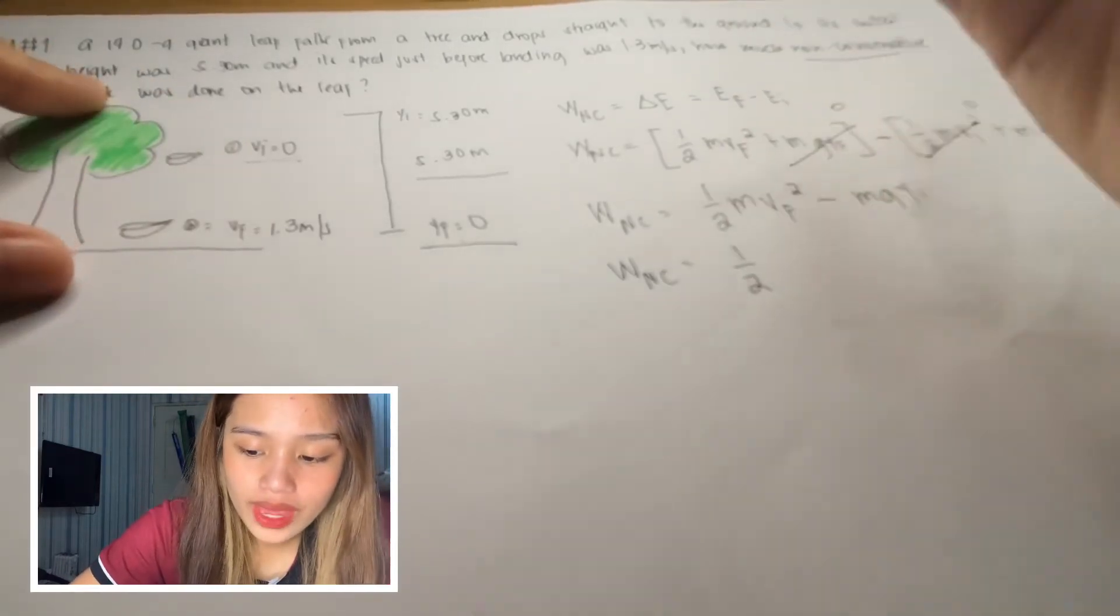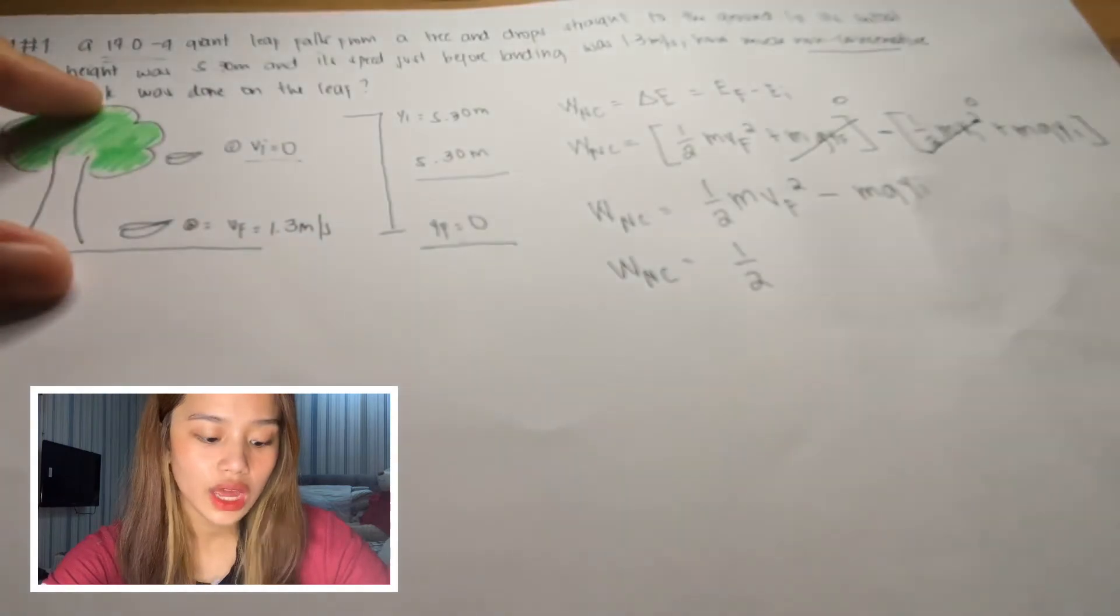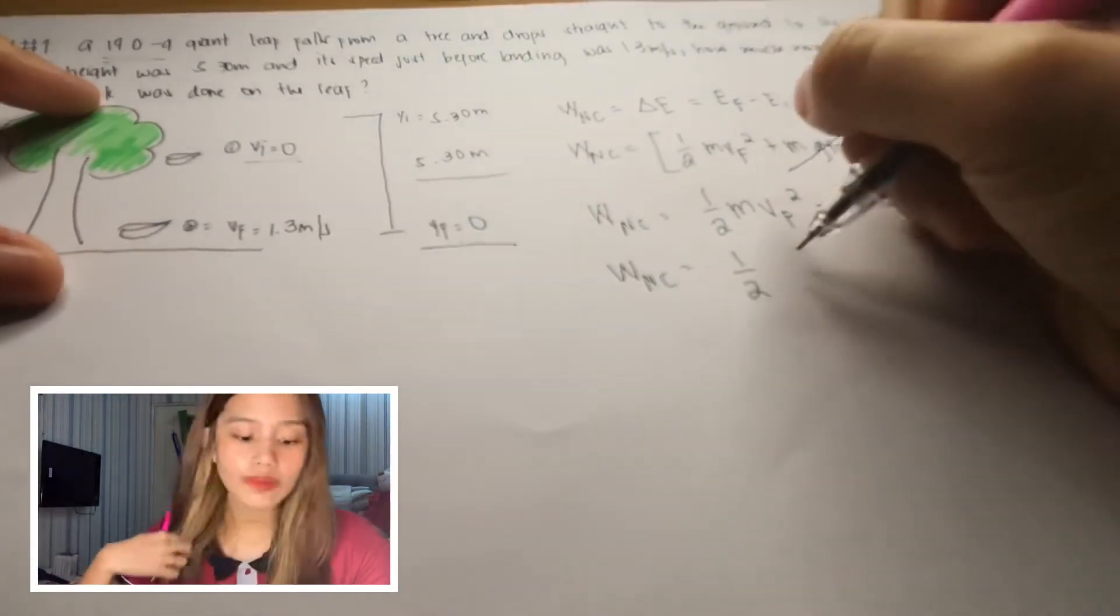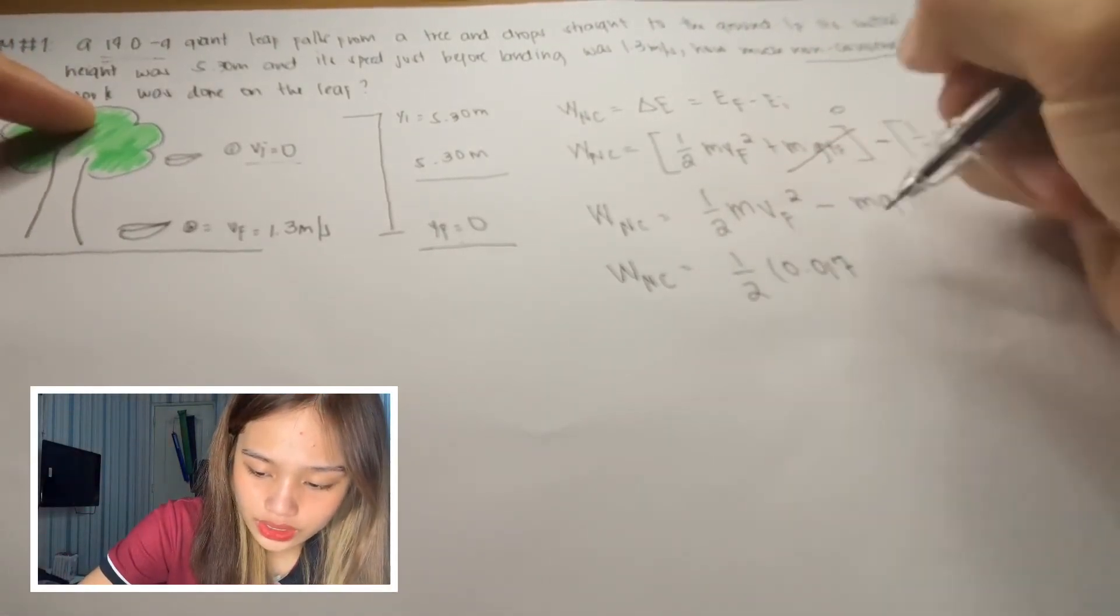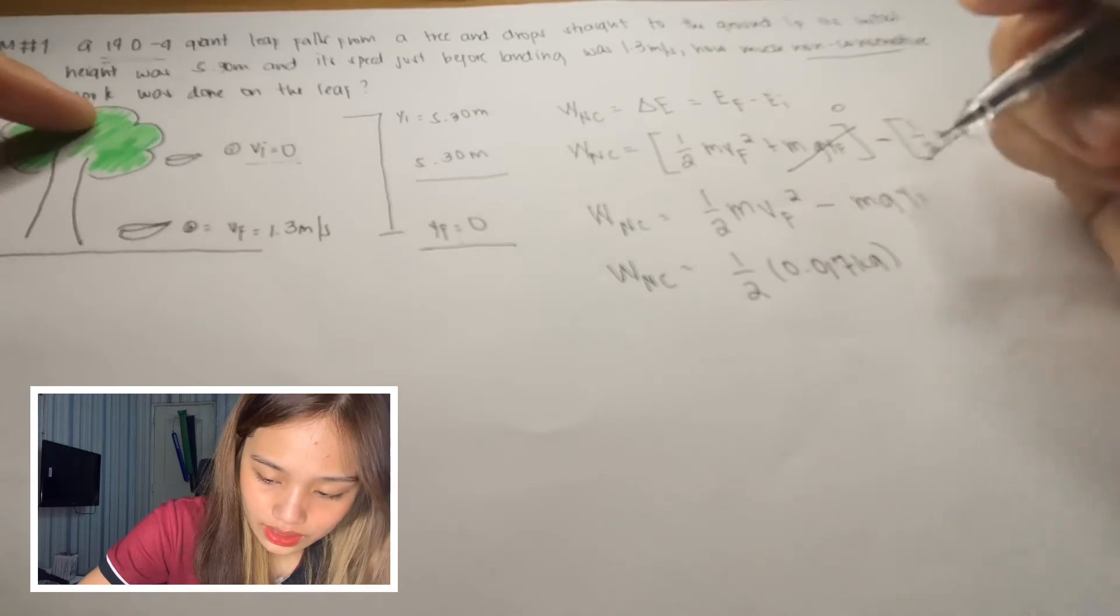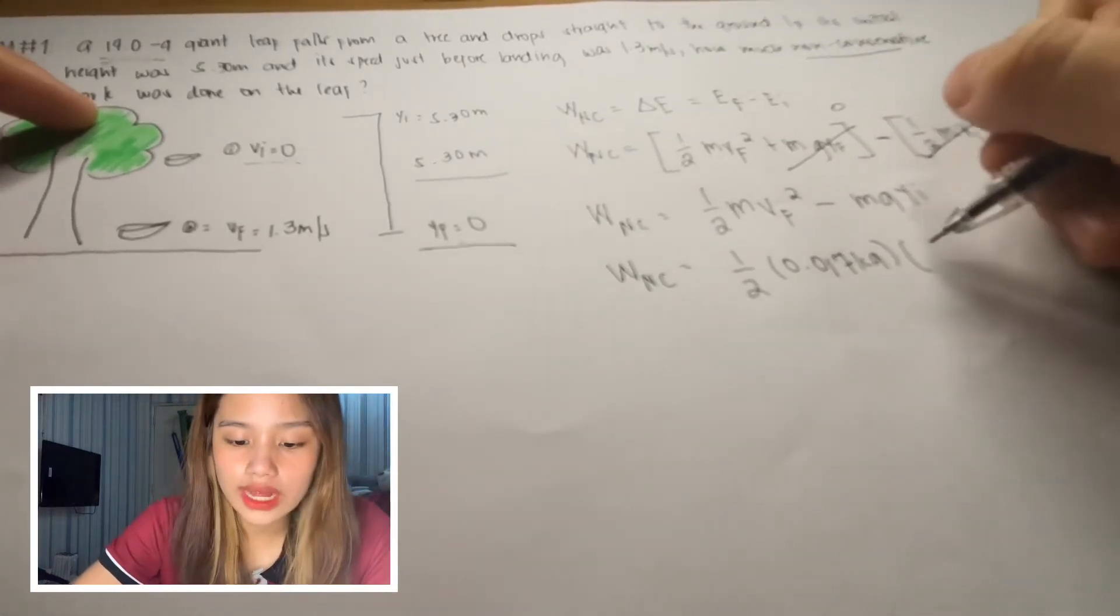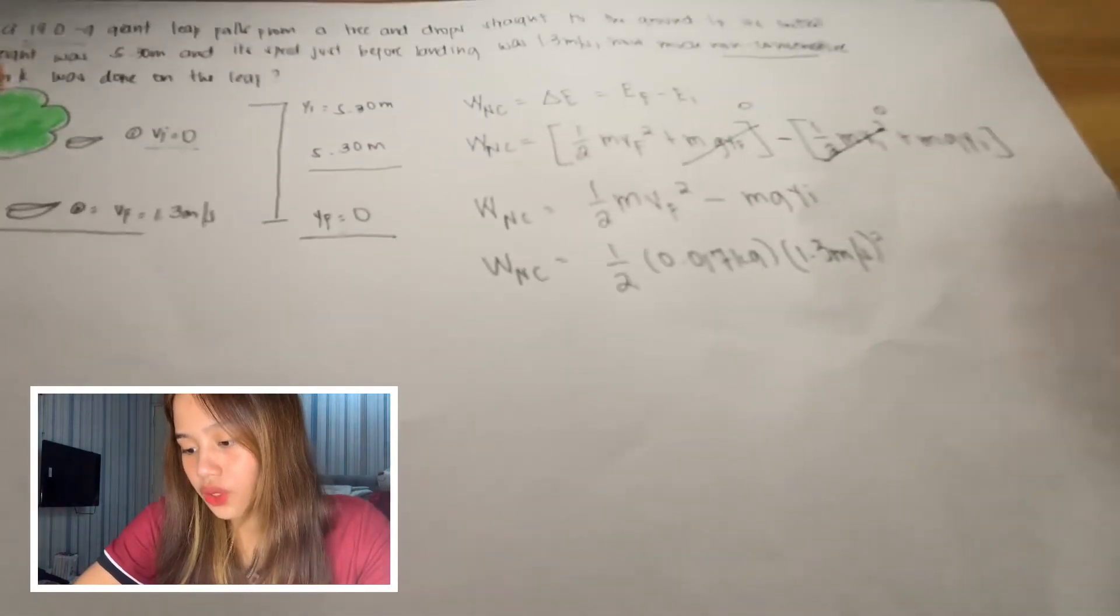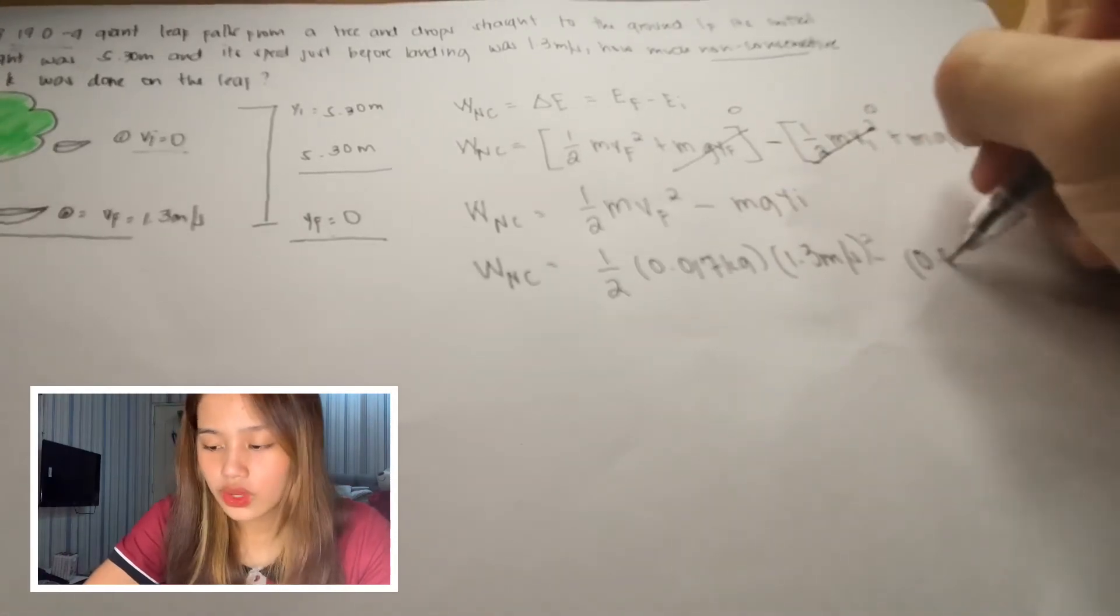So 1/2. And we have mass. This is our mass, 17 grams. So we need to convert it into kilograms. So it becomes times 0.017 kilograms.